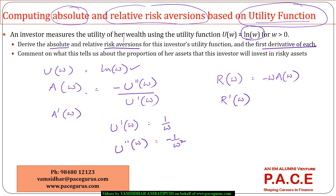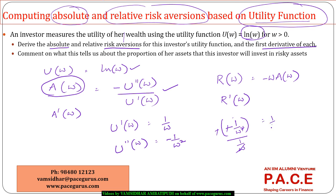Based on this, I can find the absolute risk aversion using the formula: minus u double dash of w, which is minus of minus 1 by w squared, divided by u dash of w, which is 1 by w. This works out to give absolute risk aversion A of w equals 1 by w.